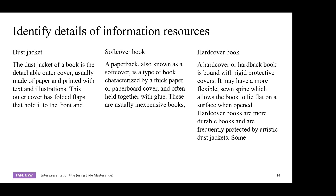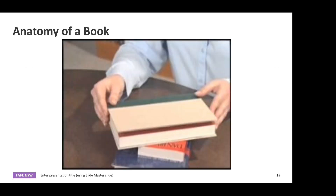When we look at each item, we're going to determine what might need to be fixed. A dust jacket is the detachable outer paper cover of a hardcover, usually printed with text and illustrations, with folded flaps that hold it to the front. A softcover book, also known as a paperback, has a thick paper or cardboard cover held together with glue and is usually inexpensive. Hardcover books are bound with rigid protective coverings, may have a more flexible sewn spine allowing the book to lie flat, and are frequently protected by artistic dust jackets.